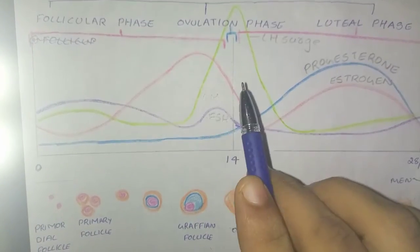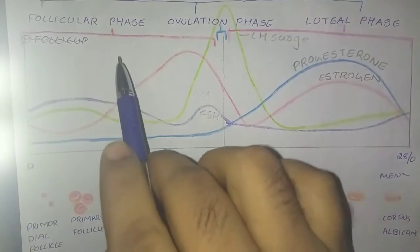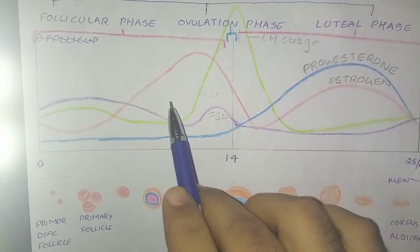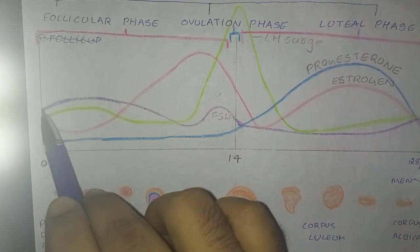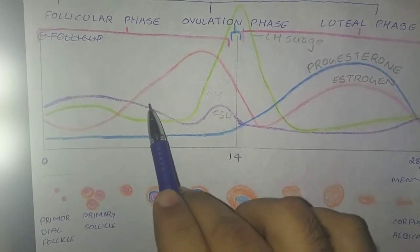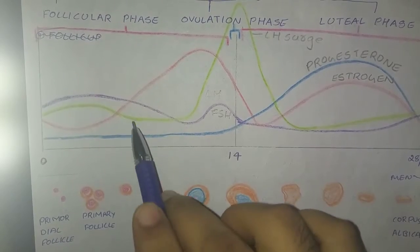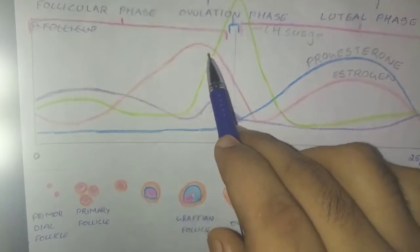There's a feature for estrogen that at low concentration this inhibits the production of FSH and LH, which is shown here. The production of FSH and LH is decreased.